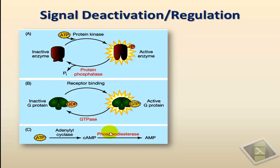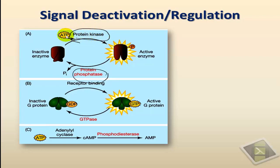The activation of chemical signaling systems has to be regulated and cannot go on indefinitely. This is important for receptors to free themselves of the chemical signals so that they can remain sensitive to future signals. This is what we call signal deactivation. There are different ways by which signaling systems can deactivate the signal, starting with protein phosphatases.